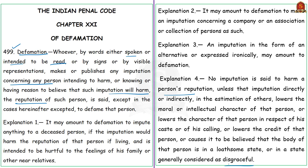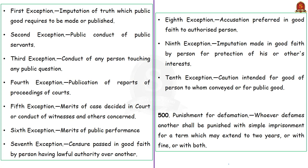Section 499 also cites several exceptions to defamation. These include imputation of truth which public good requires to be published, an opinion made in good faith regarding the public conduct of public servants or conduct of any person touching any public question, publication of reports of proceedings of the court or merits of cases decided in the court or conduct of witnesses. Also, it is not defamation if an accusation is made in good faith against any person who has lawful authority over that person with respect to the subject matter of that accusation.